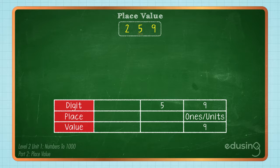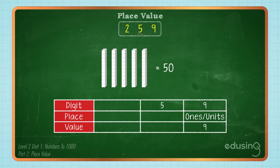The digit 5 represents the number of groups of 10 cubes. It is in the tens place and has a value of 50.